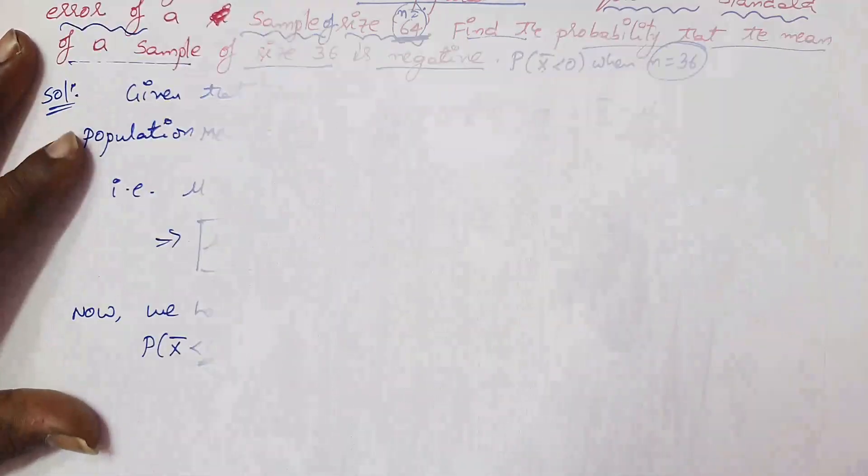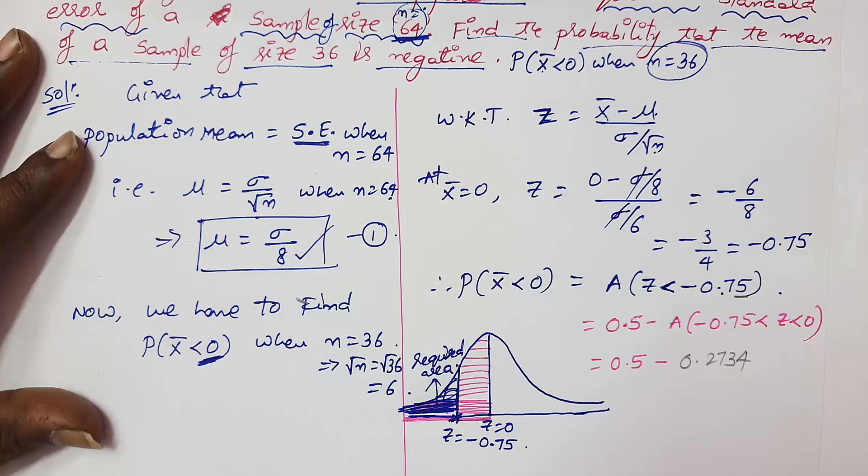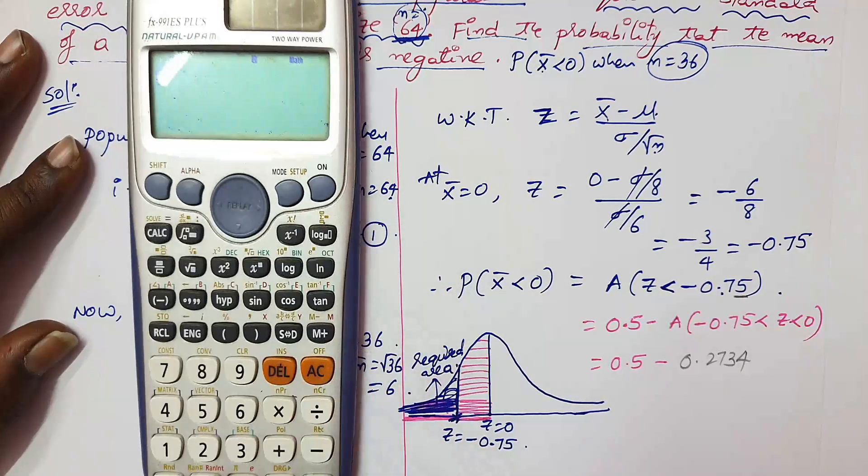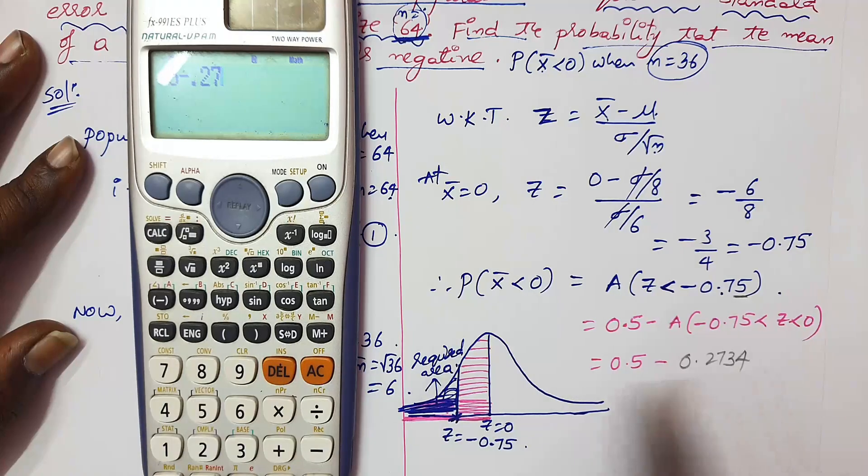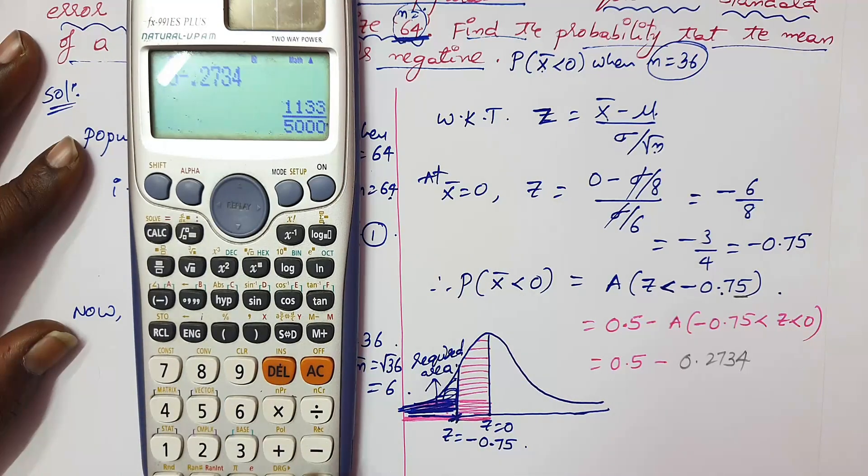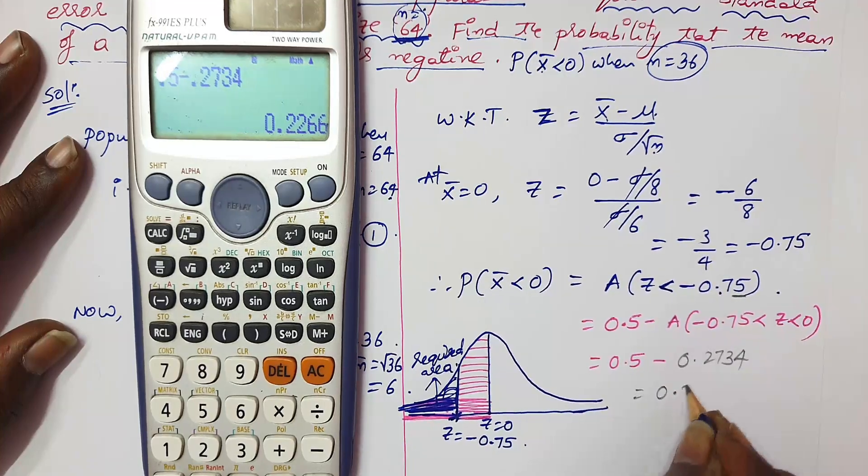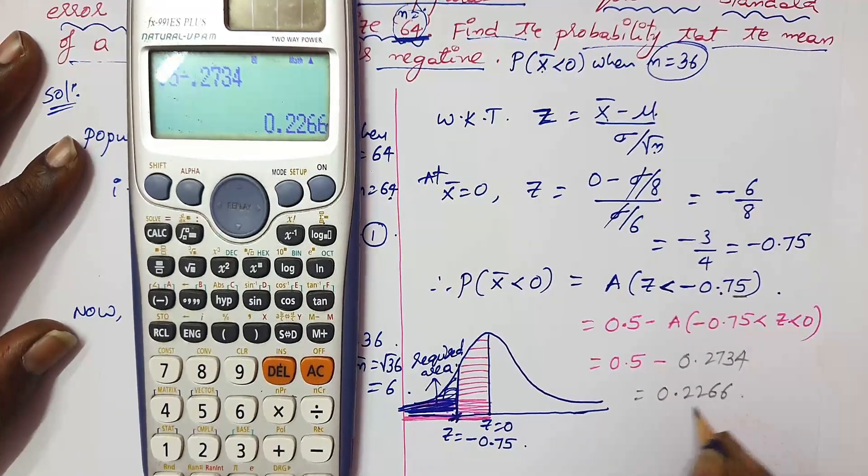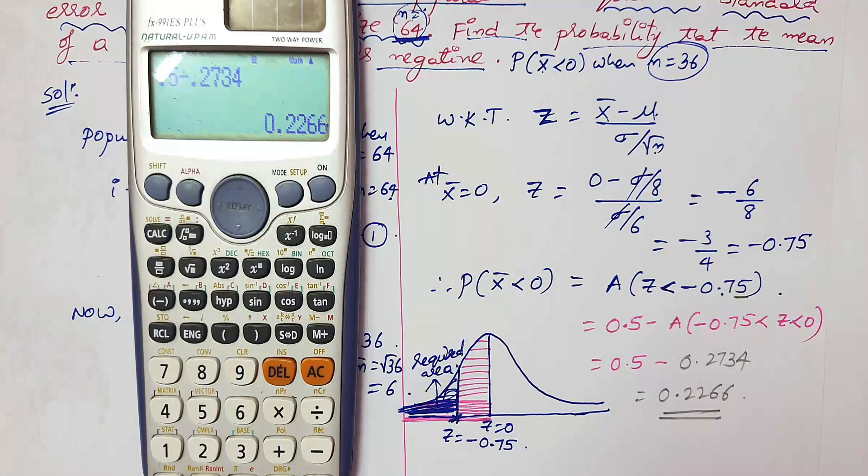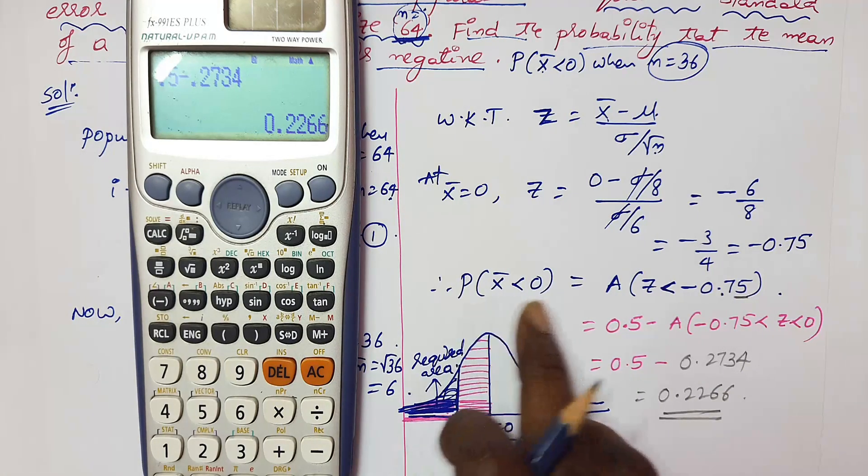0.5 minus 0.2734 would be 0.2266. This is the required probability that x bar is negative.